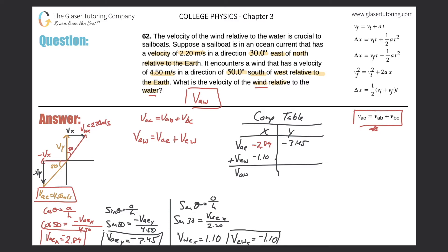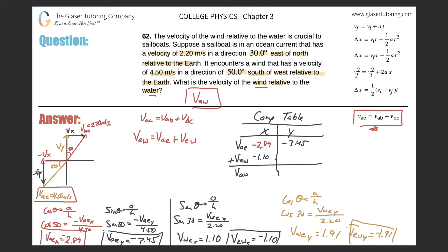For the y component: since the angle is from the y-axis, I use cosine. Cosine of 30 times 2.20 equals 1.91 m/s for the velocity of water relative to earth in y. But since I want the earth relative to the water, I negate it: −1.91. That goes into the table as well.